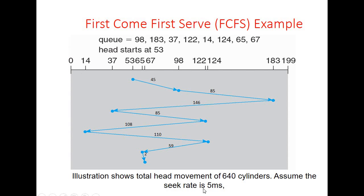The total movement of the head is 640 cylinders in this example, demonstrating the zigzag effect of first-come first-serve. The head moves from left to right and right to left to service requests in order of arrival, without servicing nearer requests first. This is the disadvantage of the first-in-first-serve algorithm — the head moves to the desired cylinder even if nearer cylinder requests are available.